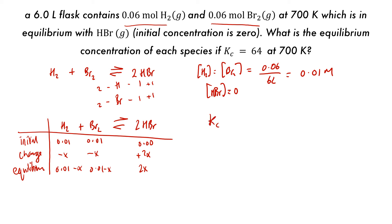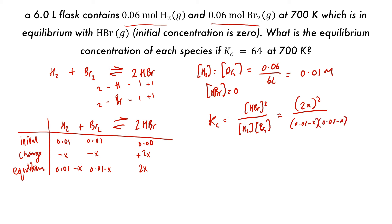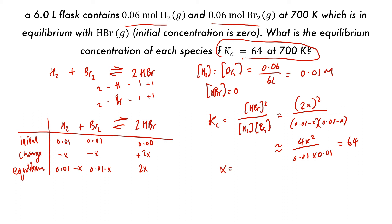Kc equals HBr squared over H2 times Br2. Plugging in equilibrium values gives 2x squared over 0.01 minus x squared. Using the approximation, this is approximately 4x squared over 0.01 times 0.01, which equals 64 as given. Solving for x gives 0.0064 divided by 4, square rooted, which gives x equal to 0.04.